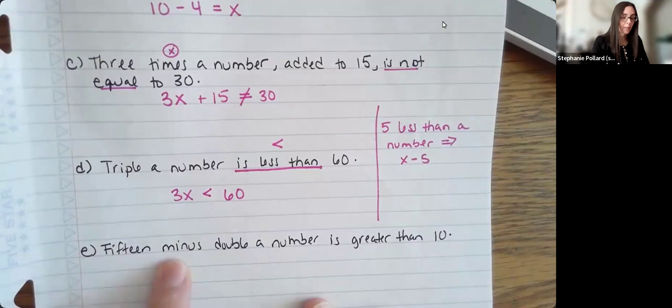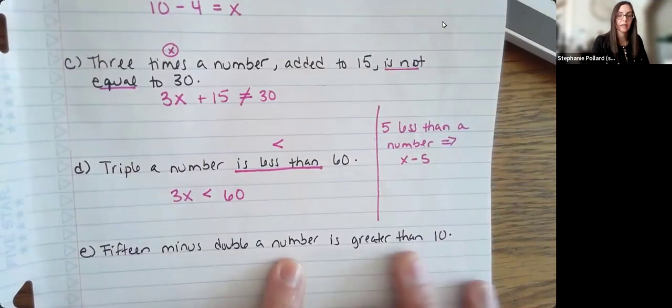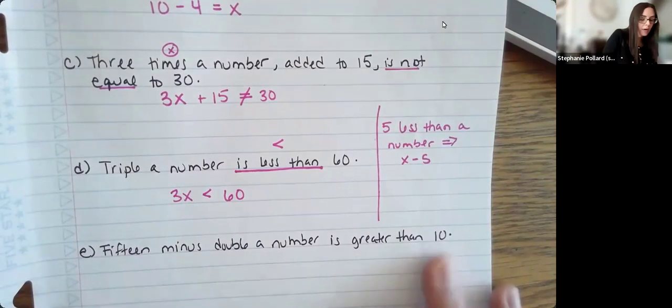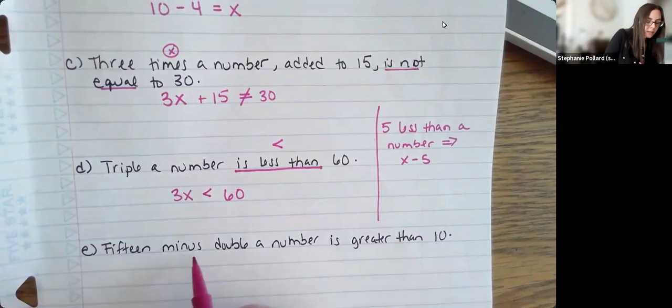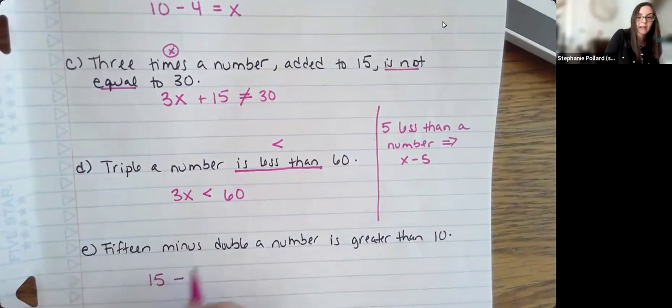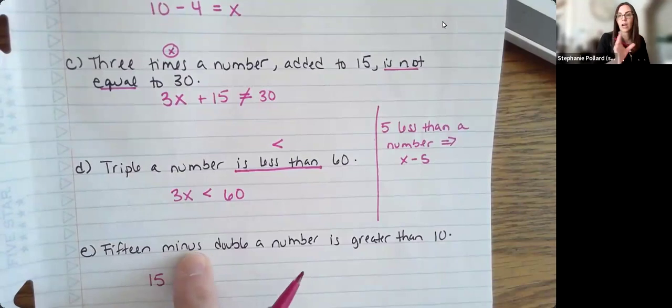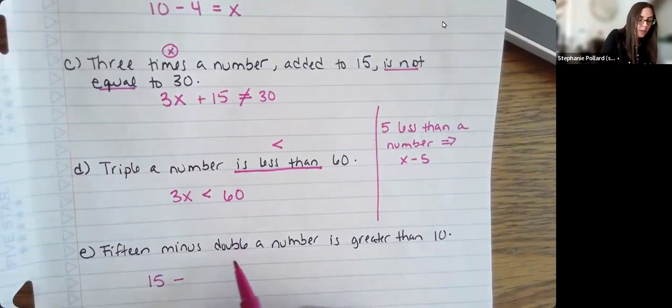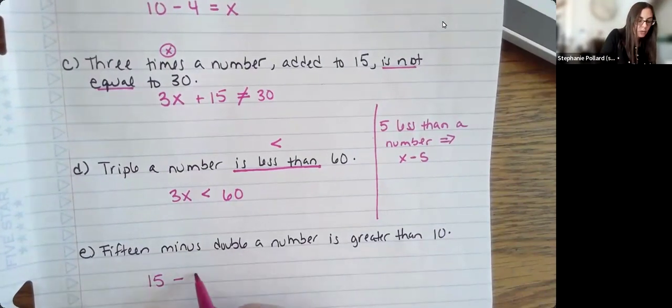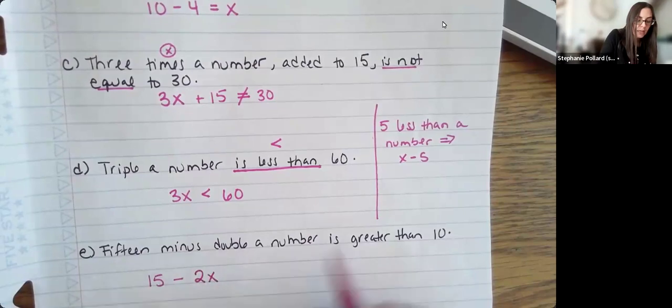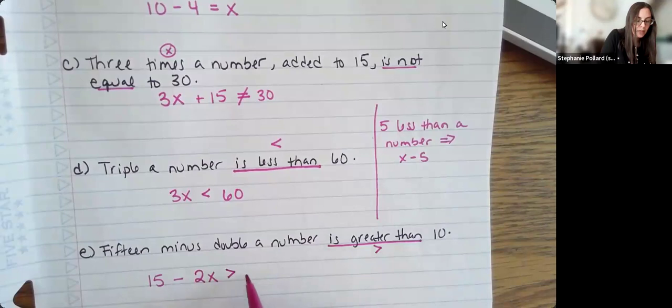15 minus double a number is greater than 10. So I have 15 minus. Again, there's no keywords there like from or than. So the subtraction is in order. Double a number means to multiply it by 2. So that would be 2x. Is greater than is a greater than sign. And then 10.